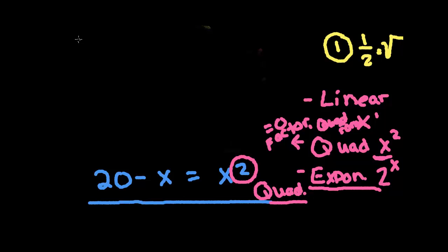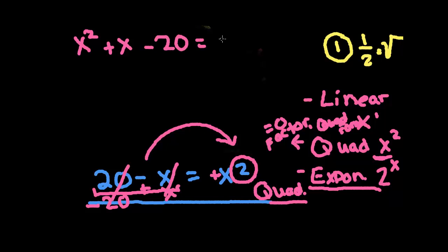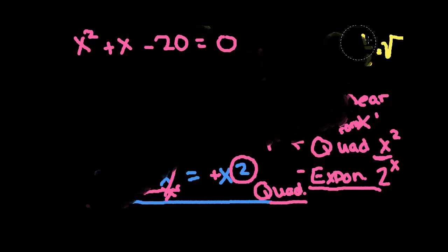Quadratic equations are always set equal to zero. So I'm going to have x squared — I want my x squared to always be positive, so I want to move the other terms to that side. I'm going to add x and subtract 20 to bring everything over, and I'm left with just zero on the right. So now I have x squared plus x minus 20 equals 0.